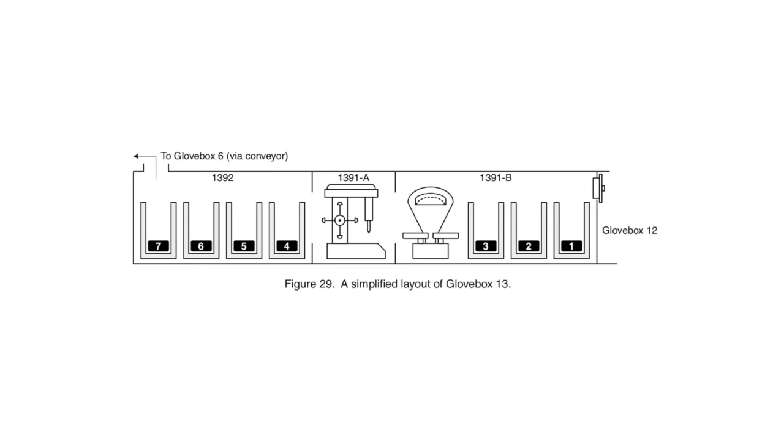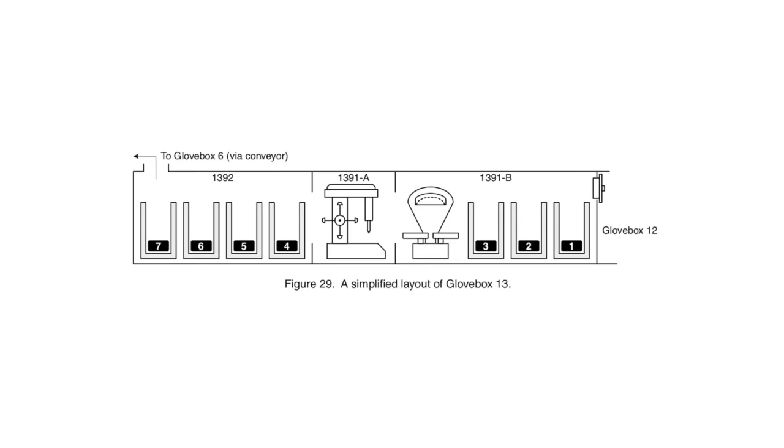The Tomsk 1978 criticality accident took place in glove box 13, which contained seven ingot containers, as well as stations for extracting samples from the ingots, station 1391-A, a station for weighing and staging, 1391-B, and a station for measuring the dimensions of the ingots, station 1392. There was no limit on the number of ingot containers in glove box 13 thanks to the separation provided by cadmium, but administrative limits required that no more than one ingot be placed into each given container. This figure displays the ingot containers as if they were set in a straight line, but in reality, containers 4 and 5 were actually behind containers 6 and 7, which made visual inspection even more difficult.